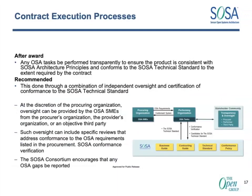In terms of execution process for contract, the intent is that after an award, any MOSA tasks are performed transparently to ensure consistency with the architecture, architectural principles, and technical standards. There is a recommendation that this be done through a combination of independent oversight and certification of conformance — that's where the conformance program comes in — to make sure that people providing products are actually doing what they say they're doing. It is at the discretion of the procuring organization to execute that oversight, and the oversight can include specific reviews that address conformance and the requirements listed in the procurement.